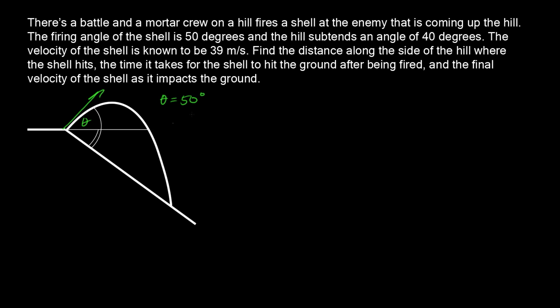The hill subtends an angle of 40 degrees — that would be this angle here, which we'll call phi. So phi equals 40 degrees. From geometry, if two parallel lines are cut by a transversal, alternate interior angles are congruent. So this is a parallel line, here's the transversal, and therefore this angle is also phi. We know the velocity of the shell is 39 meters per second, so V₀ equals 39 m/s.